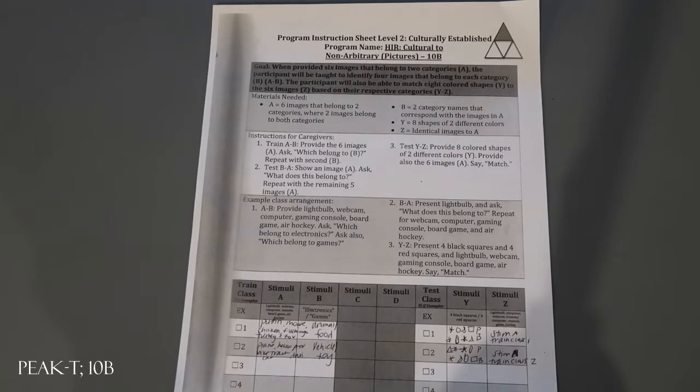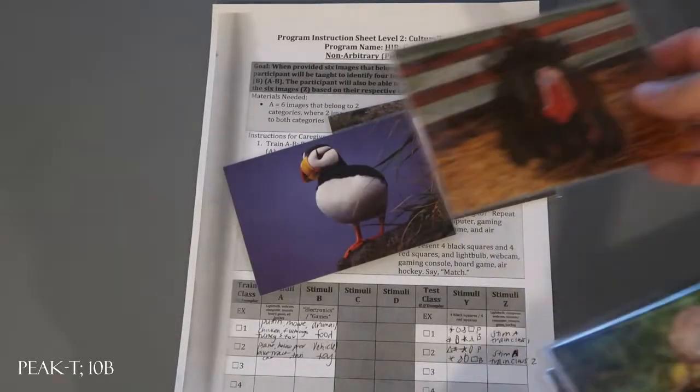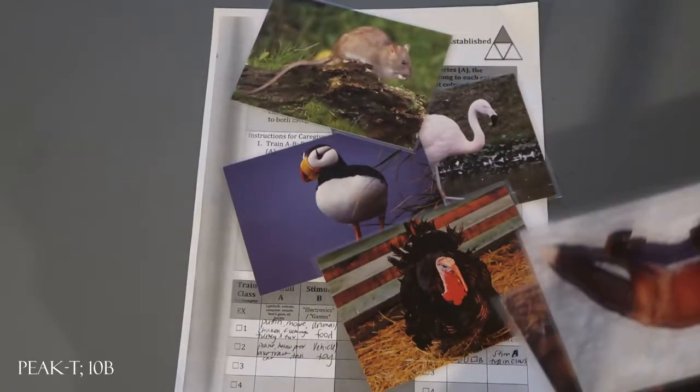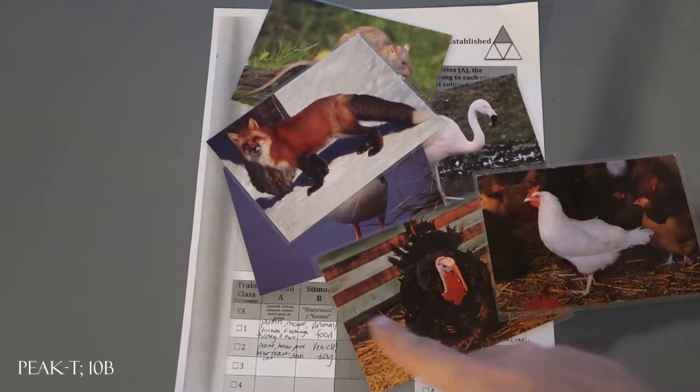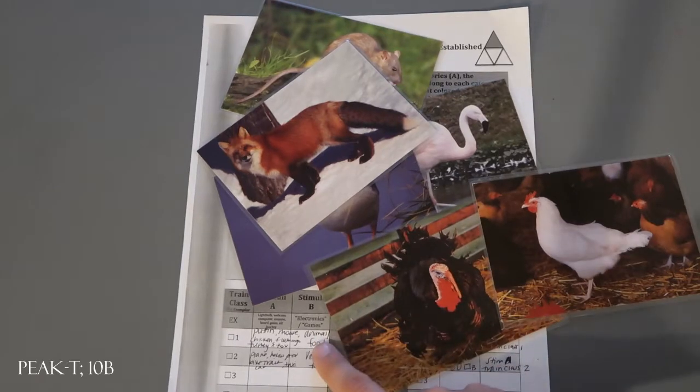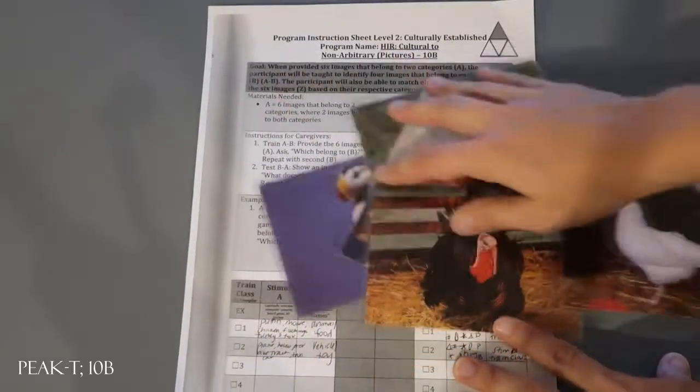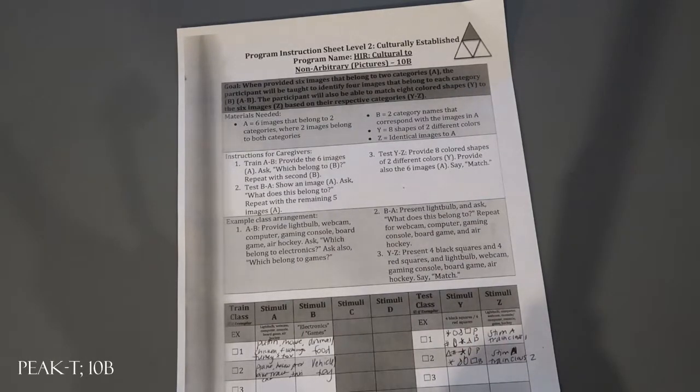For this example I'll just show you what we use for our train class one. We just use picture cards that we laminated, so we have a flamingo, a puffin, a turkey, a mouse, a fox, and a chicken. All of these are going to go into the animal category, but the turkey and the chicken are also foods.